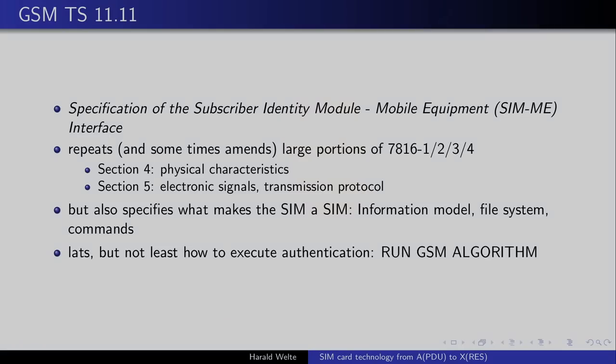The next relevant spec is GSM Technical Specification 11.11 — very easy to memorize — which is the specification of the subscriber identity module to mobile equipment interface. In GSM the mobile station is your phone, comprised of the mobile equipment (the hardware) and the SIM. Interestingly it doesn't just refer to the ISO specs but actually repeats large portions of those specs with amendments. Beyond the ISO standards, it specifies what makes a SIM a SIM: the information model, the file system on the card, and the commands and protocols used — as well as how to execute the GSM algorithm to perform cryptographic authentication.